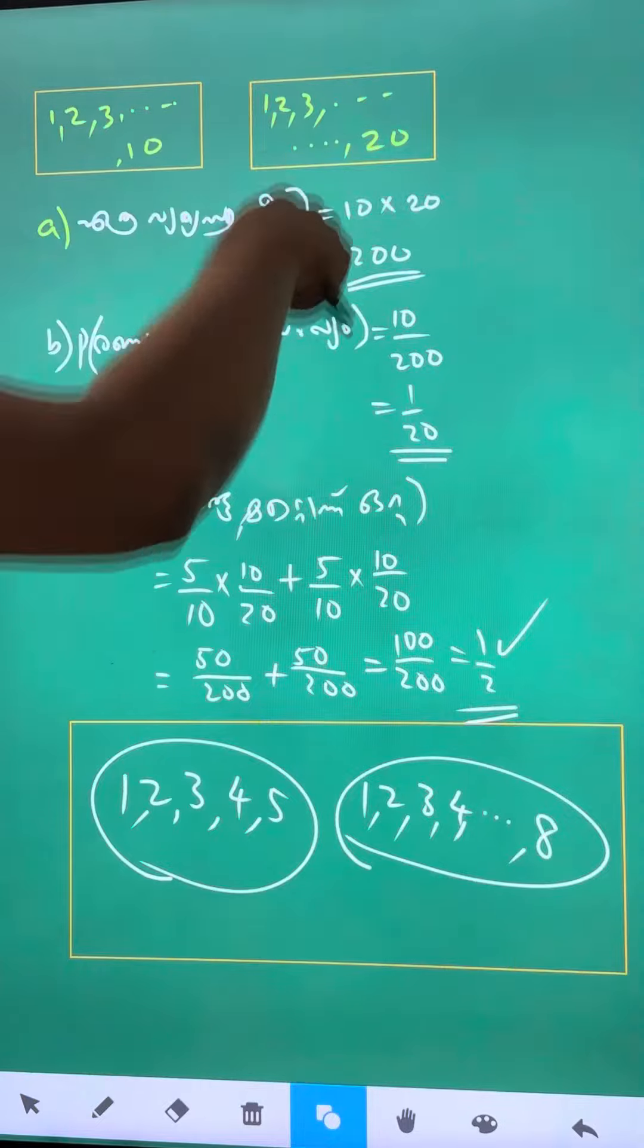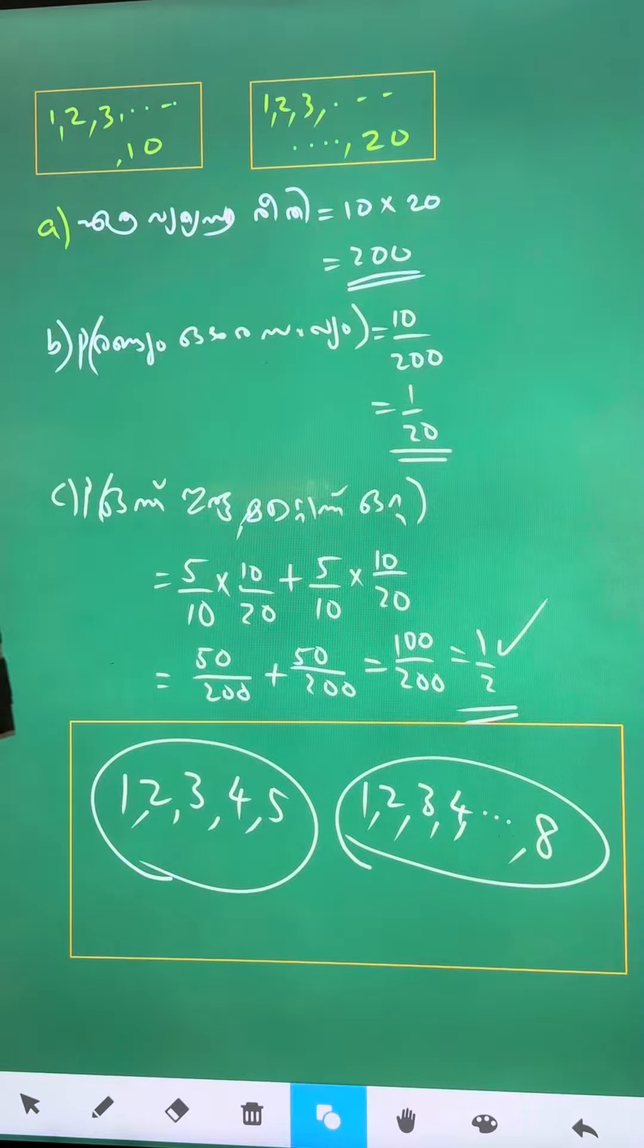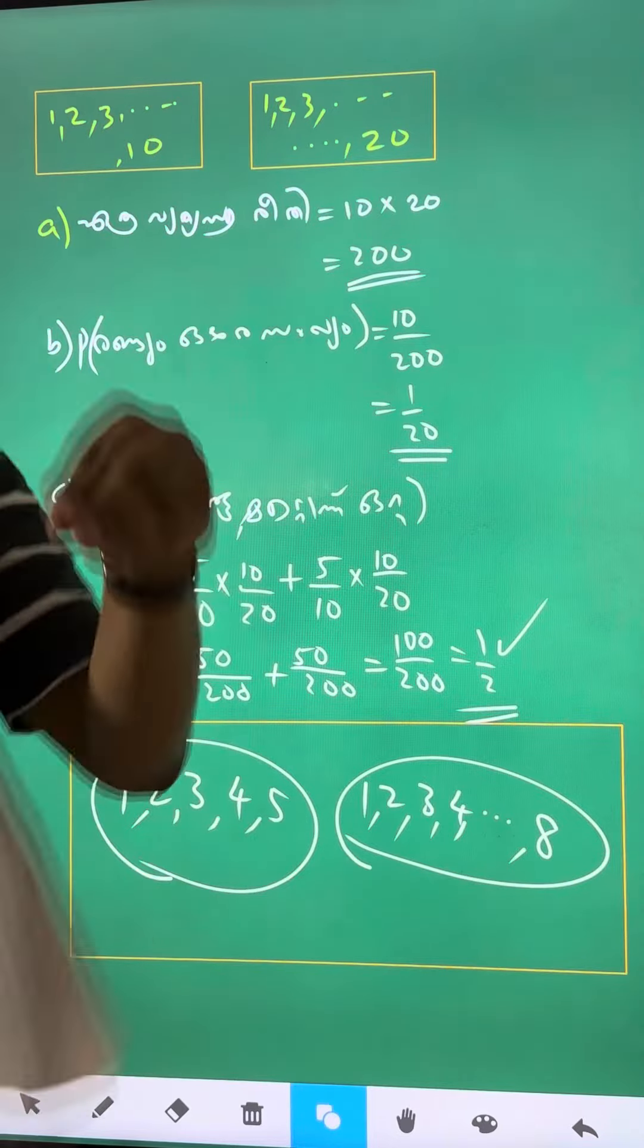We have 10 people in the first place and 20 people in the last place. When we have 10 people in the first place...